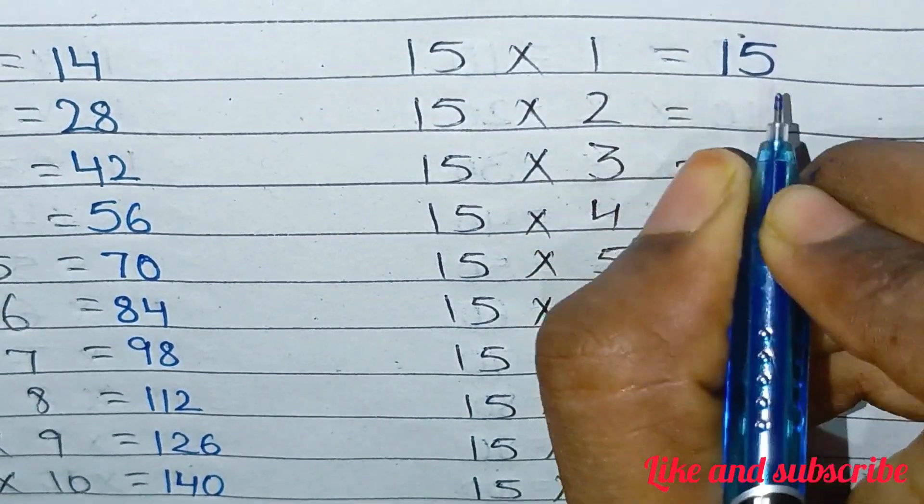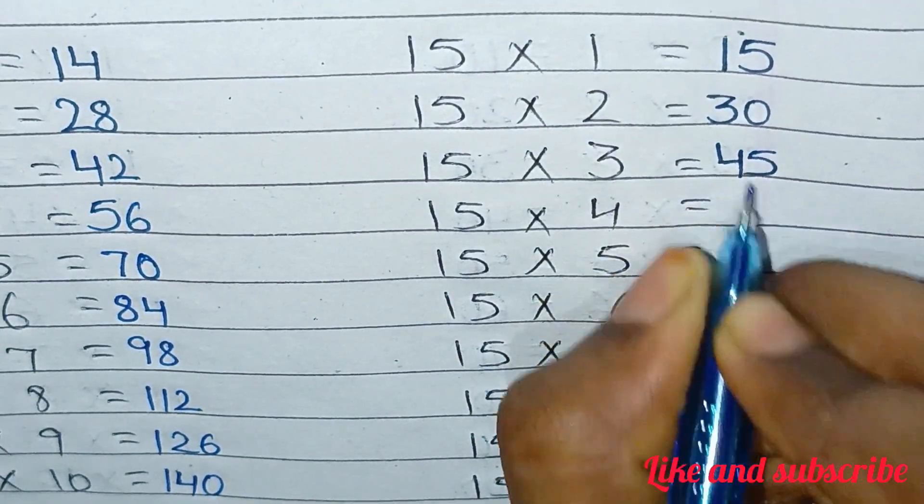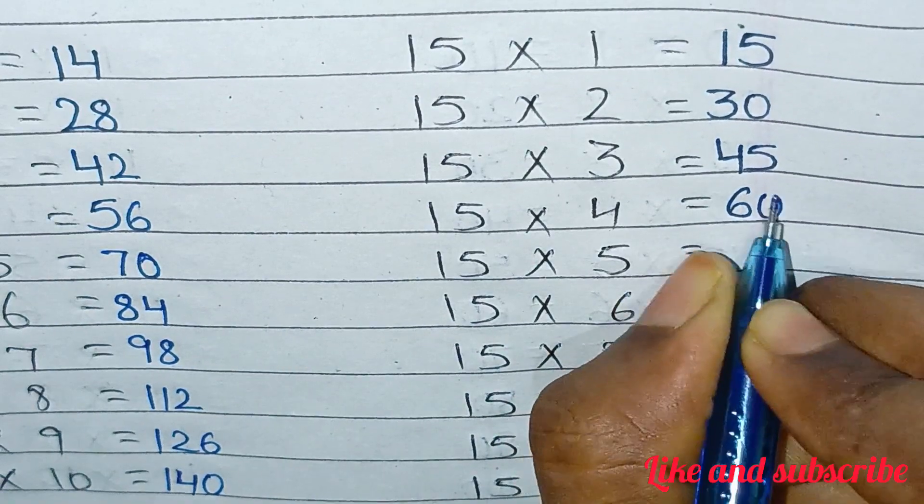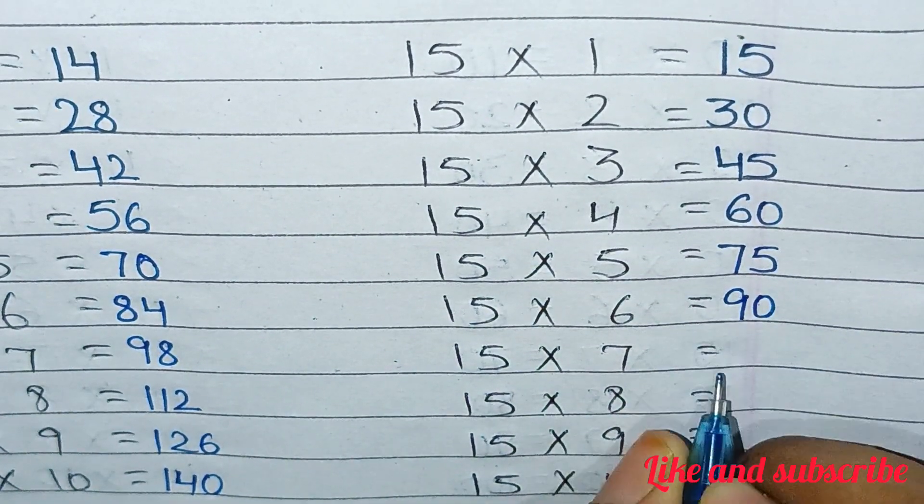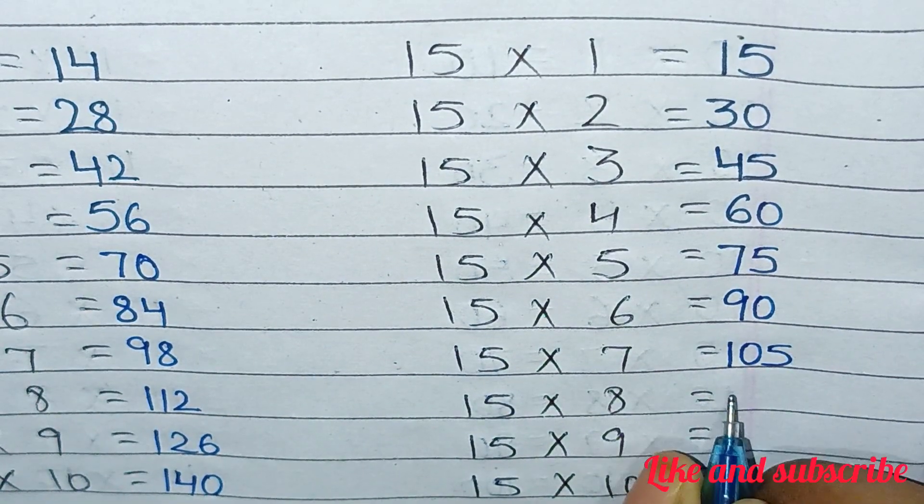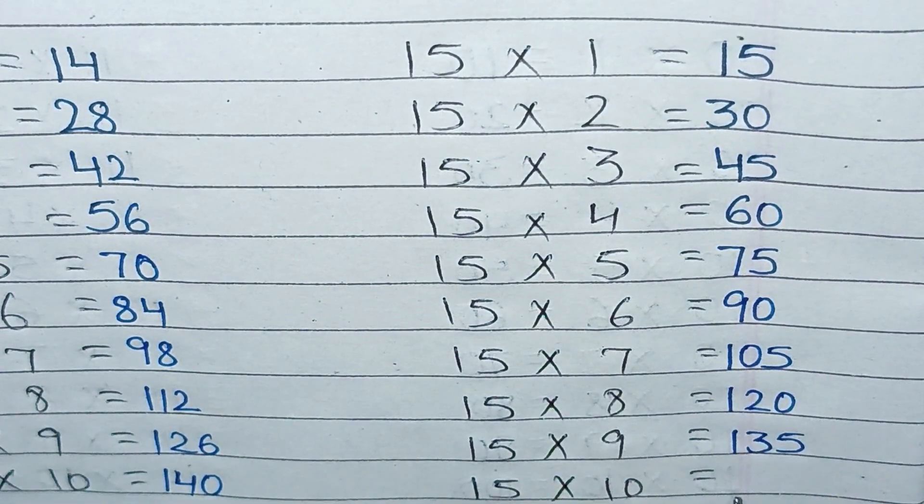15×1=15, 15×2=30, 15×3=45, 15×4=60, 15×5=75, 15×6=90, 15×7=105, 15×8=120, 15×9=135, 15×10=150.